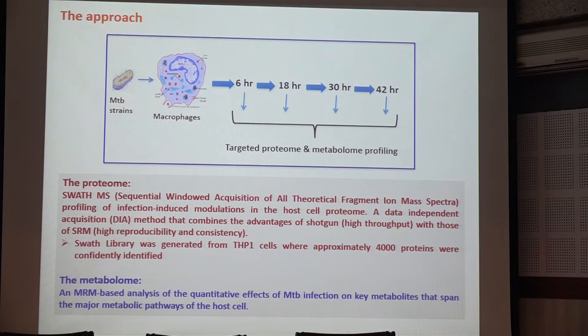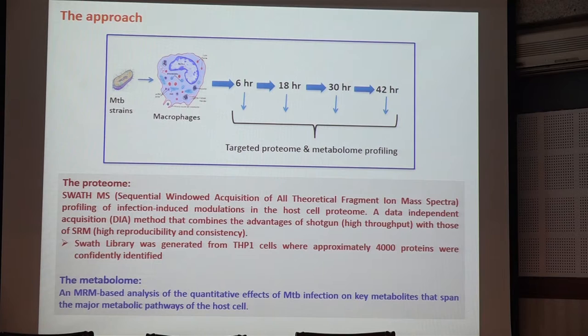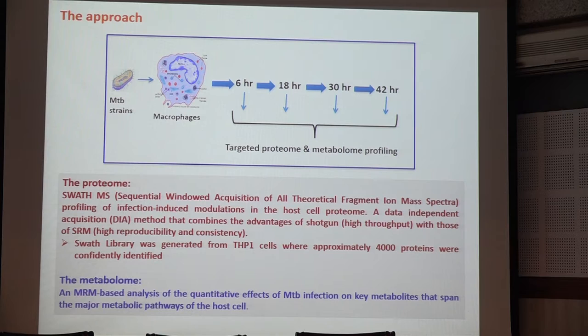To summarize the approach: we take macrophages, infect them with mycobacteria of whatever strain, and analyze them at various time points after infection. We ask: what are the changes in protein levels? These are quantitative changes, and for that we use a technique called SWATH — sequential window acquisition of all theoretical fragments. Essentially, it's like a digital map of the proteome of the cell. You can quantify it and look at what is happening to any subset of proteins you're interested in, tracking quantitative changes at different times of infection. You can actually get a profile of how protein levels are changing as a function of the duration of infection.